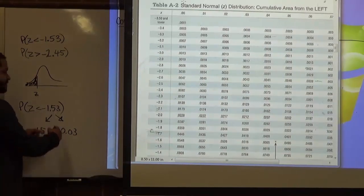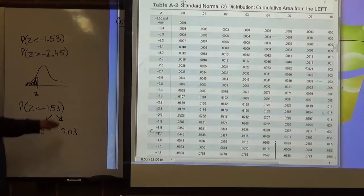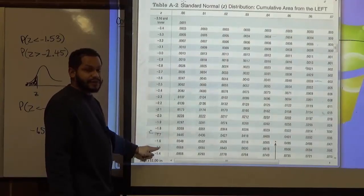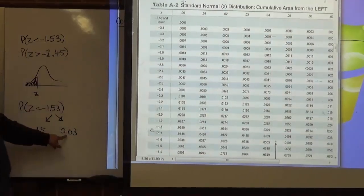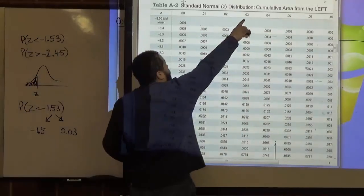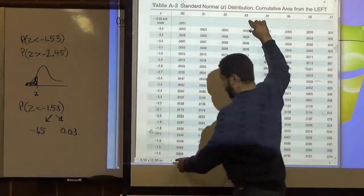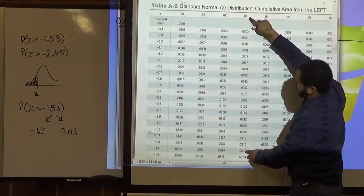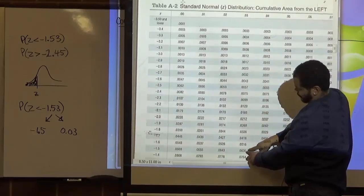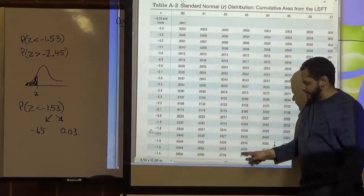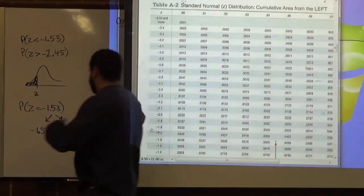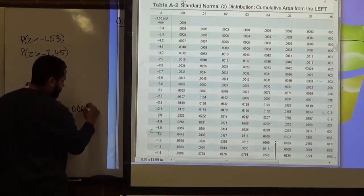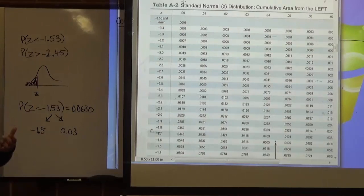We find negative 1.5 on the left-hand side of the z-column — negative 1.5 is all the way down here. Then we take the second component, 0.03, which is the column header. Just like reading a multiplication table, we go along the row of negative 1.5 and down the column of 0.03, and we get the area of 0.0630. So the area corresponding to the z-score of negative 1.53 is 0.0630.